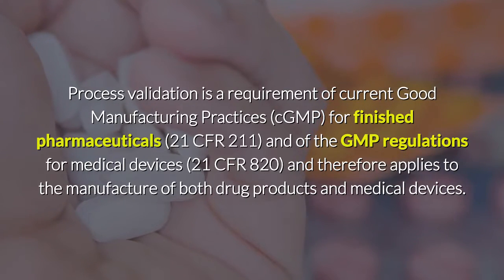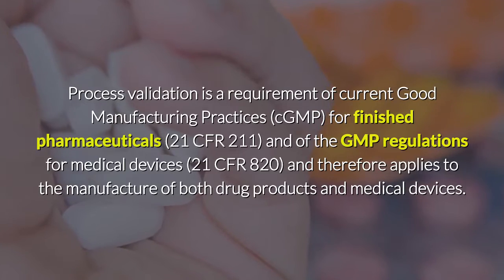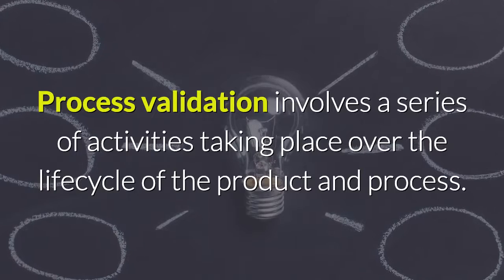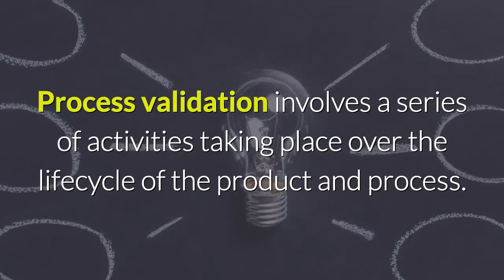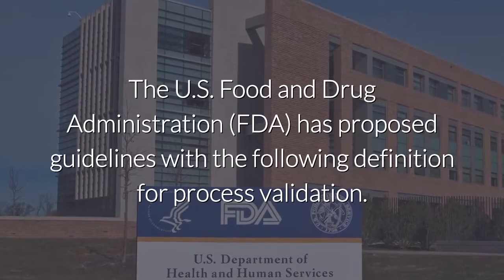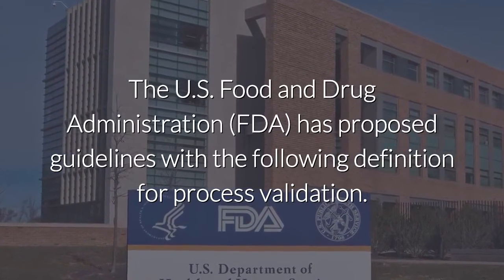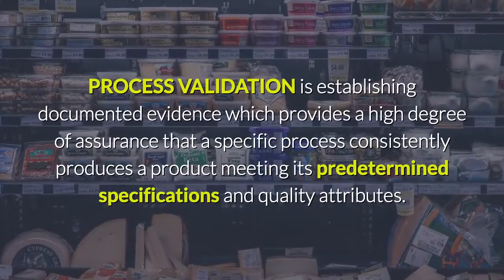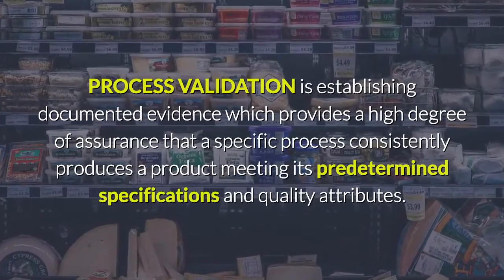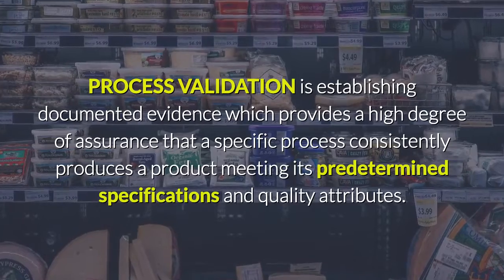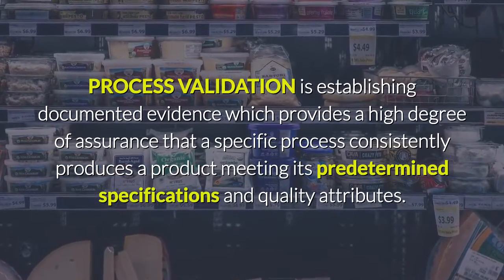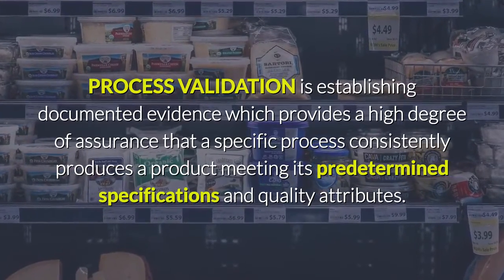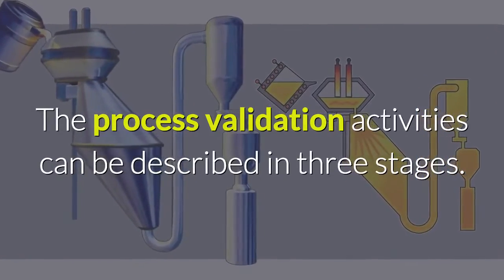Process validation therefore applies to the manufacture of both drug products and medical devices, and involves a series of activities taking place over the life cycle of the product and process. The FDA has proposed guidelines with the following definition: process validation is establishing documented evidence which provides a high degree of assurance that a specific process consistently produces a product meeting its predetermined specifications and quality attributes.